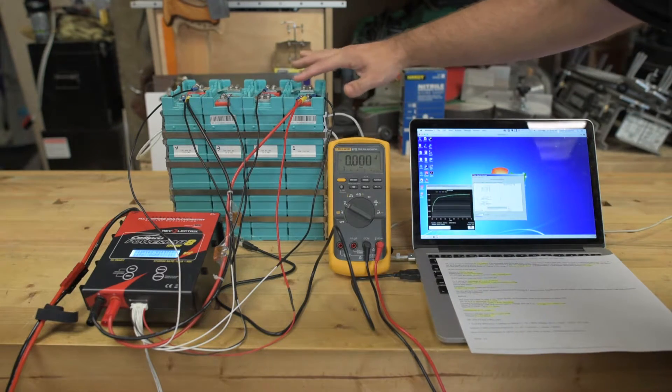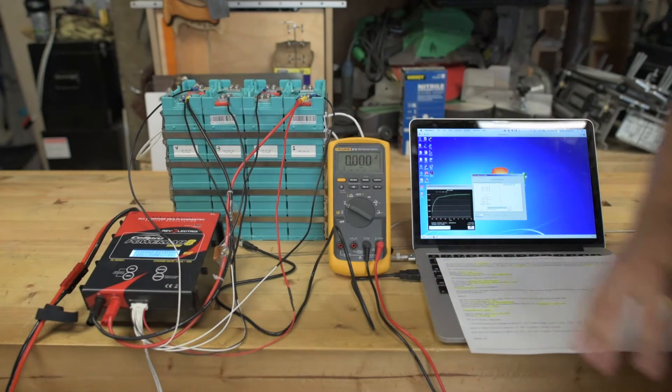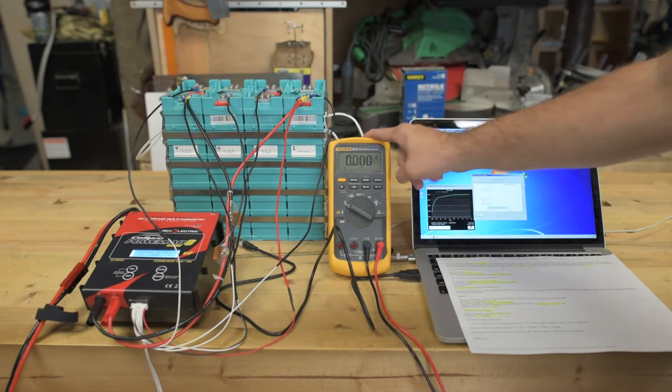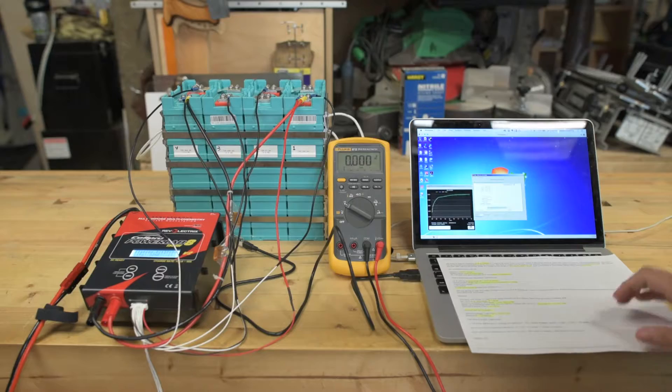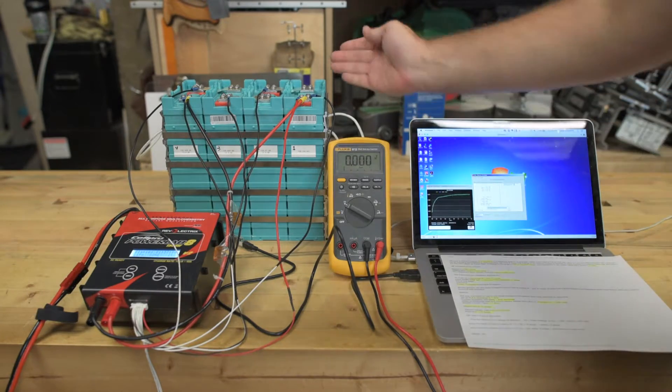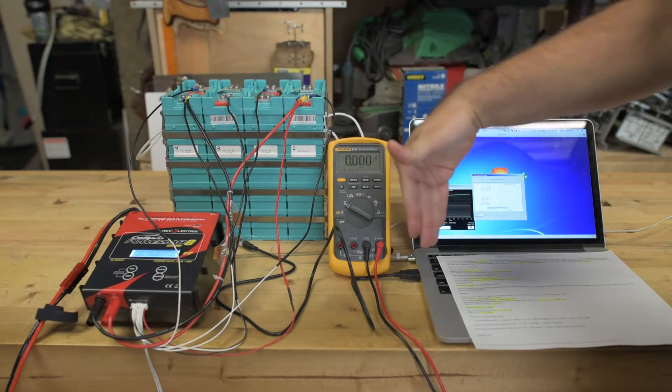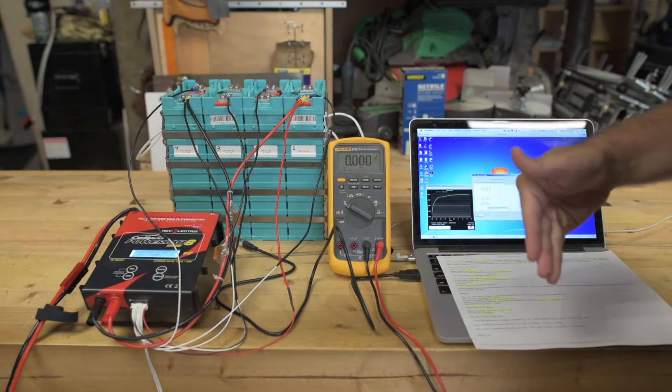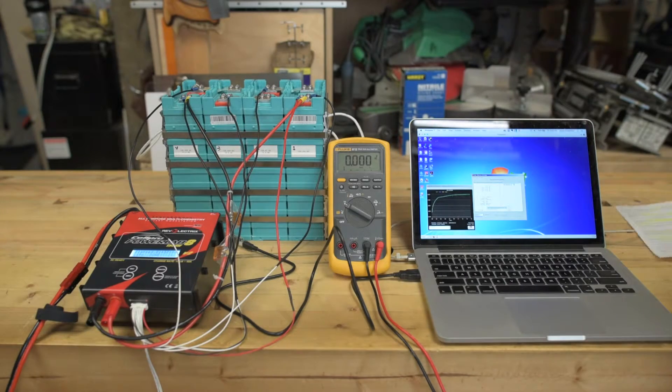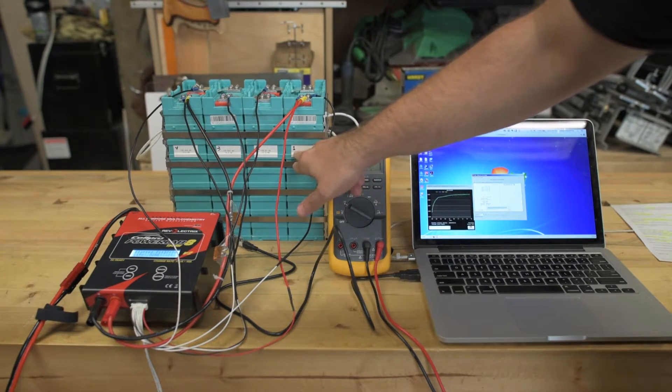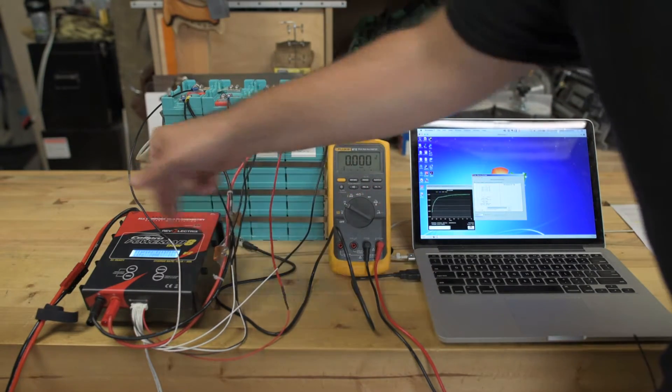All voltages are going to be taken directly from the terminals of the battery using the Fluke 87. What we're going to do is the first time around, we're going to discharge the battery at 1 amp, and then the second time around, we're going to discharge the battery at 10 amps, and we're just going to measure the voltage readings on each individual cell. I have my cells labeled. This is 1, 2, 3, and 4.